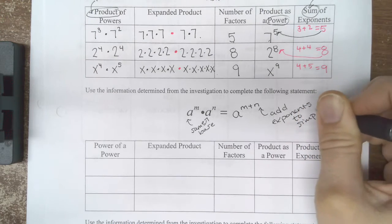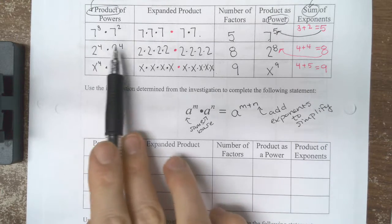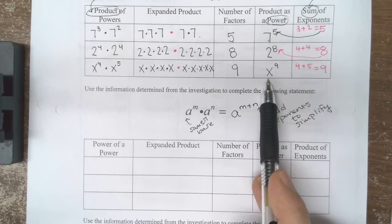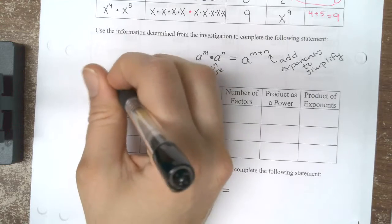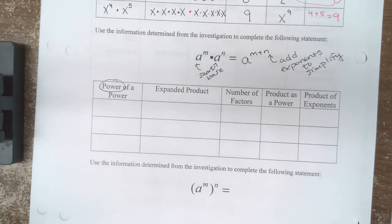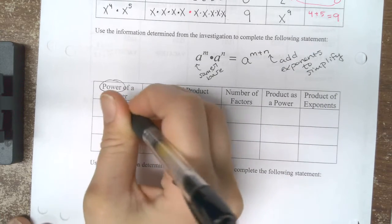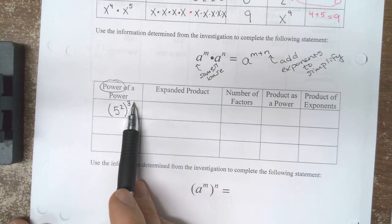Okay, so we've discovered that that property works. If I just added my exponents, I can condense it and write a simplified version. Let's look at another property, which is called a power of a power. So we're no longer looking at a product; we're looking at a power being raised to another power. For example, the power being raised to another power, 5 squared cubed.